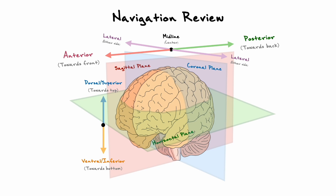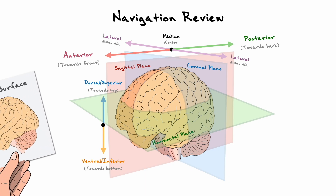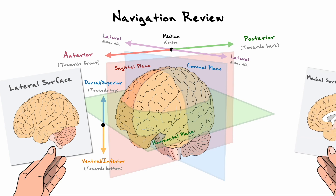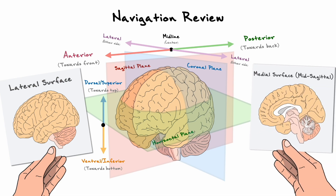One last detail: in the upcoming sections and even in previous diagrams, I have mostly used two views of the brain — the view of the lateral surface and the view of the medial surface. The medial surface can be obtained by taking a sagittal cut right in the middle of the brain to separate the two hemispheres; this cut is also known as the mid-sagittal cut. We will cover more perspectives throughout this video, but I wanted to point these two out because they are the most common views in any neuroanatomy textbook.